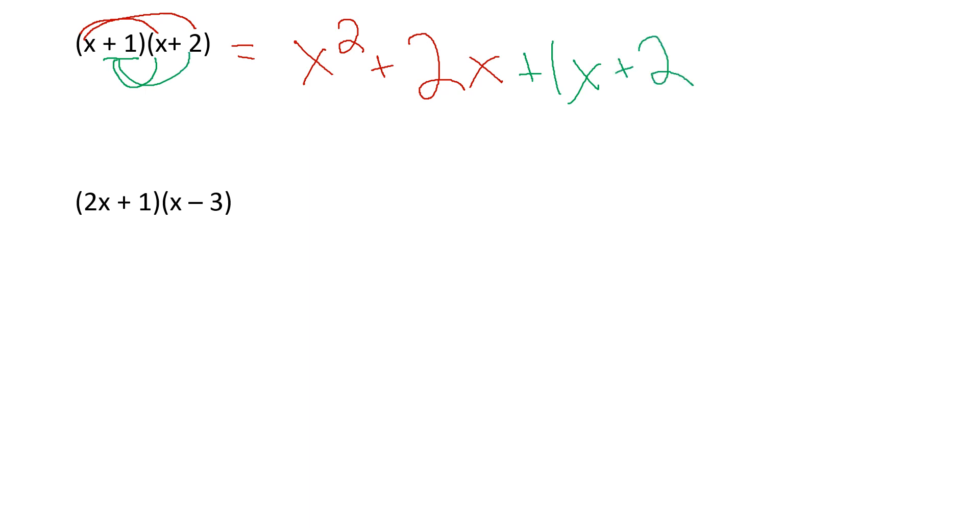So step 1 is to distribute to both pieces. At this point, though, I'm not done, because I have like terms. If you get to a place where you have like terms, you need to add them. Now, I don't have any other x squared, so that x squared is going to stay. 2x plus 1x is 3x. And then this 2 is all by itself, so then it's just plus 2. And that is it.